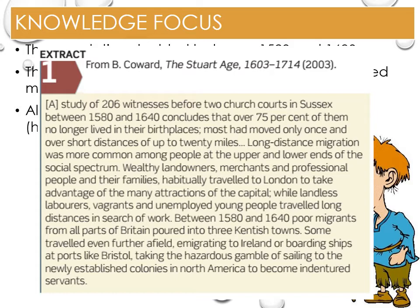Between 1580 and 1640, poor migrants from all parts of Britain poured into three Kentish towns. There are reports of people walking from Yorkshire to Kent, some 250 miles — some ten days' walk over dangerous terrain. Some travelled even further afield, migrating to Ireland or boarding ships at ports like Bristol, taking the enormous gamble of sailing to the newly established colonies in North America to become indentured servants. So not only were people migrating for religious reasons, it was also economic in nature. The idea of indentured servitude is a contract between two individuals for someone to live and work off the debt of travel and subsistence to start a new life. As the African slave trade grew, this option decreased for many poor individuals.